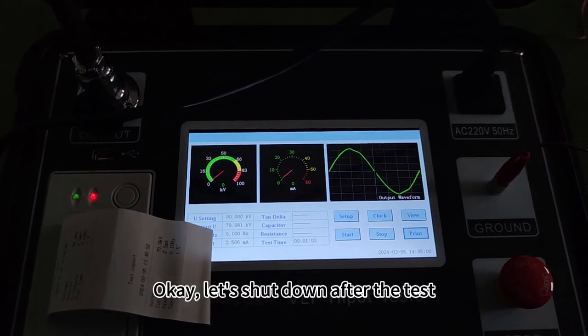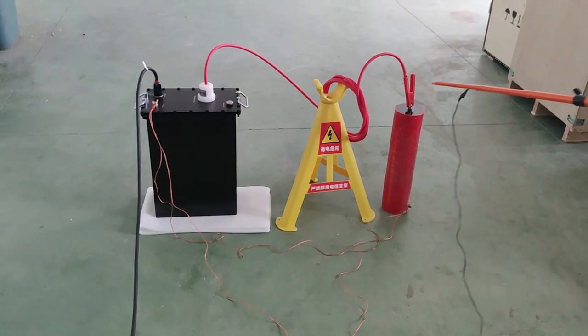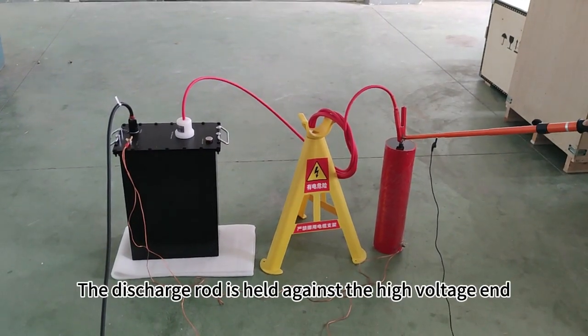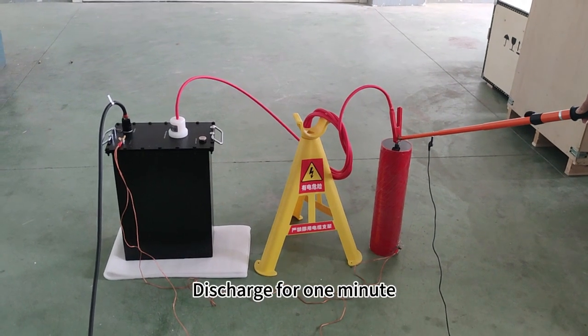Okay, let's shut down after the test. Power off. Next, discharge. The discharge rod is held against the high voltage end. Discharge for one minute.